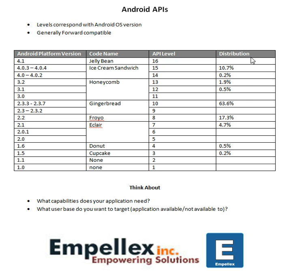We can see the distribution — the percentage of users that are on each Android version. So if we look here, we may develop our applications to target Gingerbread, maybe version 2.3, and take advantage of reaching 63.6% of users. Things to think about when looking at what version of Android you want to develop for: what capabilities does your application need, and what user base do you want to target or not target?